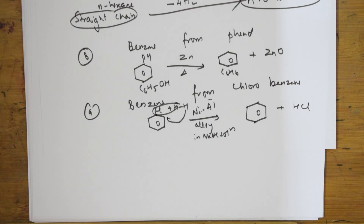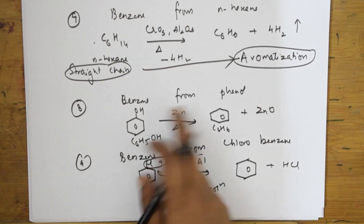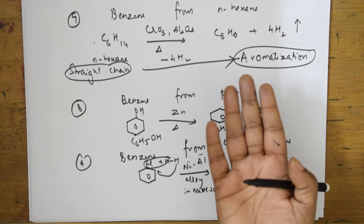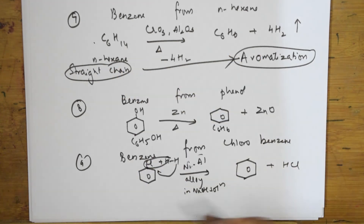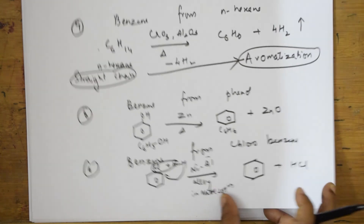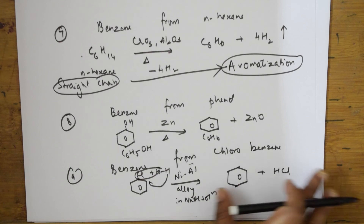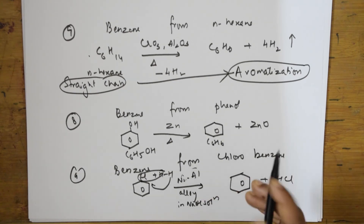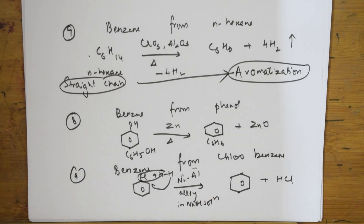So we have seen the different preparations of benzene: from benzene sulfonic acid, using soda lime decarboxylation, reduction of phenol, conversion from N-hexane, phenol to benzene, and chlorobenzene to benzene. I will come back and teach you the properties of benzene along with the mechanisms. Thank you for watching.